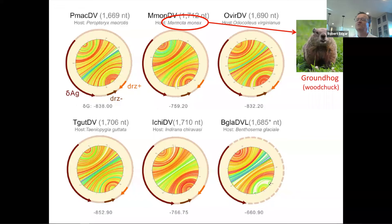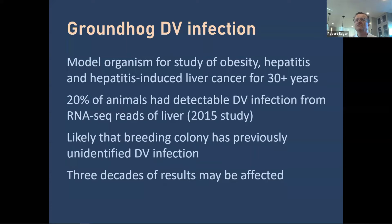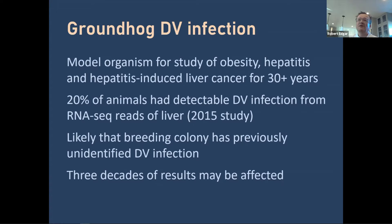I want to talk about one we found in what Americans call a groundhog and Canadians and Brits call a woodchuck. It turns out woodchuck is a model organism for studying obesity, hepatitis, and hepatitis-induced liver cancer — it's been around for some 30-odd years. In the SRA datasets there were some RNA-seq datasets for liver in these animals, and we found that roughly 20% of them had a detectable Delta virus infection, which hadn't previously been noted. It seems the breeding colony probably has had an unidentified Delta virus infection circulating for a while, and this potentially affects three decades of results studying the hepatitis effects on these animals.